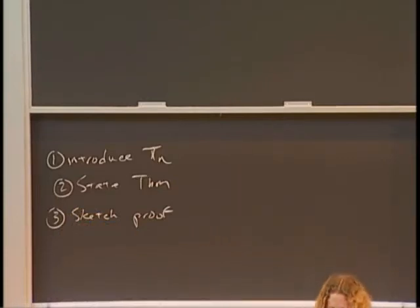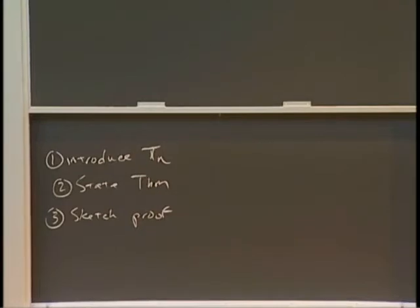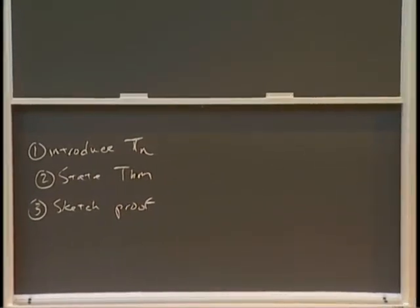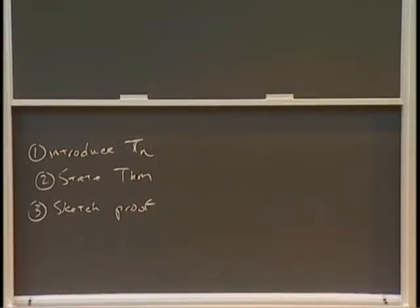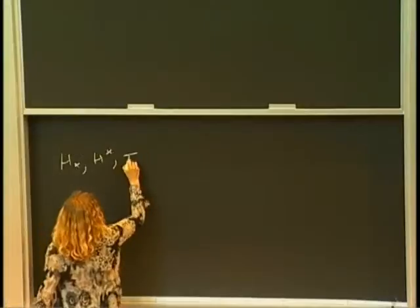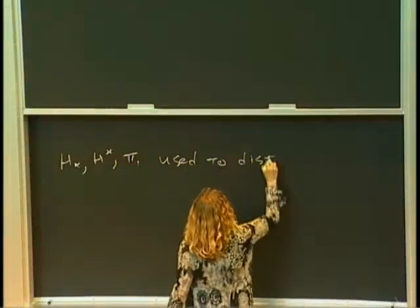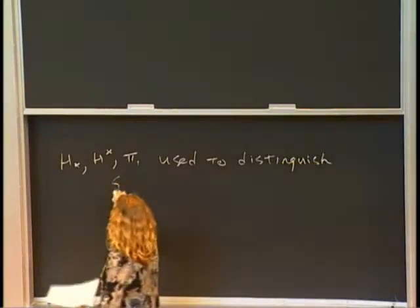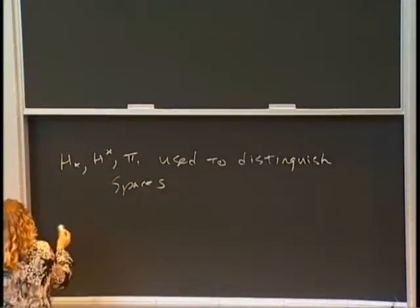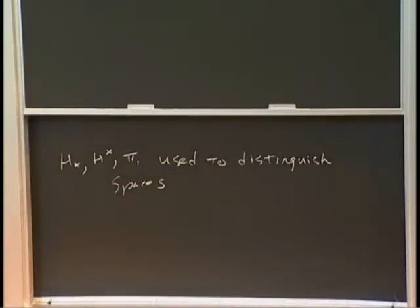So before defining the higher homotopy groups, let me start with just a little bit of motivation. So I am assuming that you've all seen homology, cohomology, and the fundamental group. So those are algebraic invariants that the first uses of them are to distinguish spaces. If two spaces X and Y have non-isomorphic homology, non-isomorphic fundamental group, then they are not homotopy equivalent. So homology, cohomology, pi_1 are used to distinguish spaces. And I'm realizing that these are all going to be covered up, so let me start over again here.